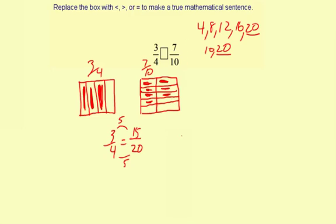Same idea for your tenths, 7 tenths. How do you get your 20? You multiply by 2. It's the same thing here, multiply by 2. So you get 7 times 2, which is 14. Then you're comparing 15 twentieths and 14 twentieths.